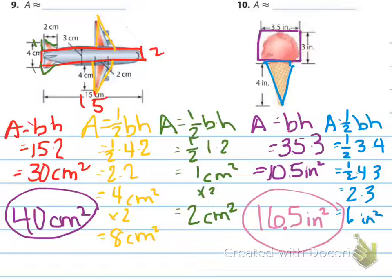Especially for number 10, I kind of estimated what I thought the base for this ice cream cone would be. I made it 3, maybe it could be 2.5, maybe it could be 2, who knows. Remember, this is just estimating, so we could have a little bit different answers, but they shouldn't be super far off.